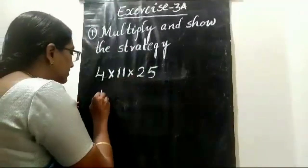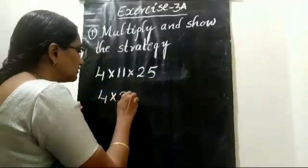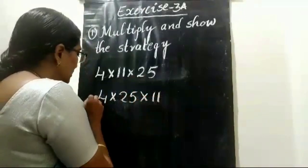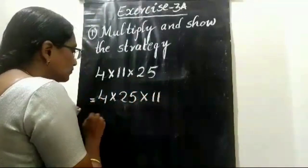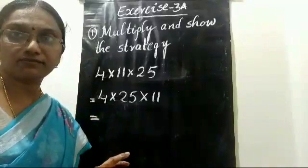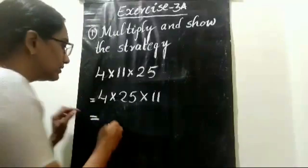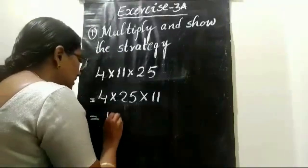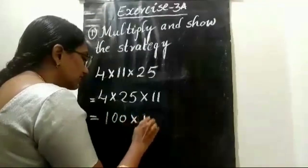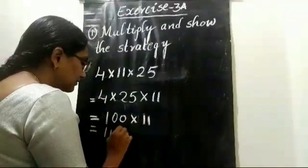See this example: 4 into 25 into 11. Consider 4 and 25 first: 25 plus 25 is 50, and in the same way 4 twentyfives is 100. Write 100 into 11, which equals 1100.